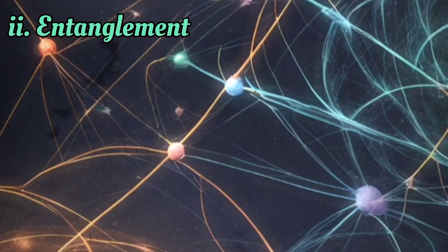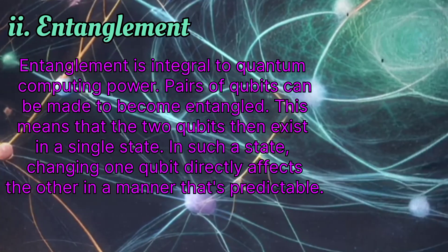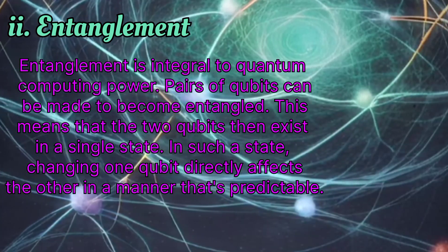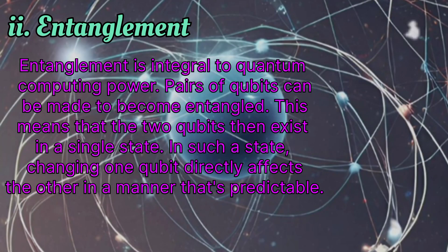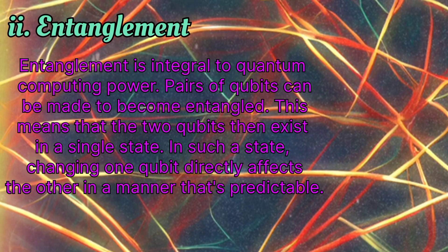Entanglement is integral to quantum computing power. A pair of qubits can be made to become entangled, meaning the two qubits exist in a single state. In such a state, changing one qubit directly affects the other in a predictable manner.